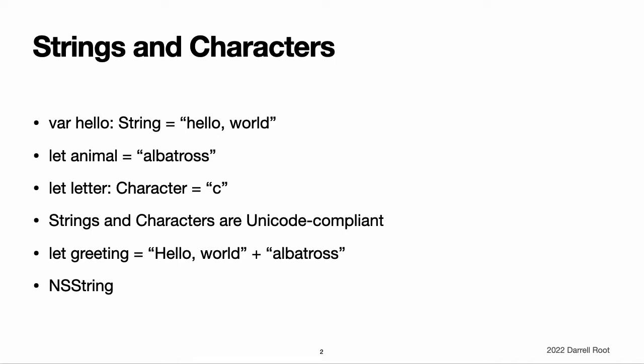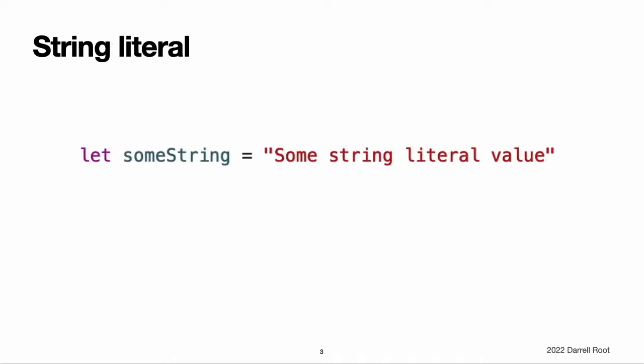For more information about using String with Foundation and Cocoa, see Bridging Between String and NSString. You can include predefined string values within your code as string literals. A string literal is a sequence of characters surrounded by double quotation marks. Use a string literal as an initial value for a constant or a variable. Note that Swift infers a type of String for the constant because it is initialized with a string literal value.